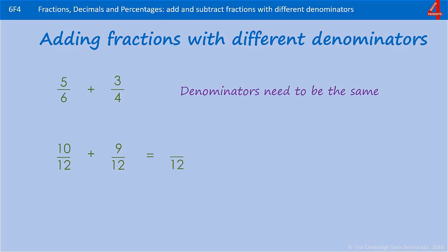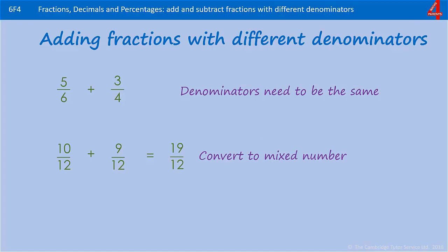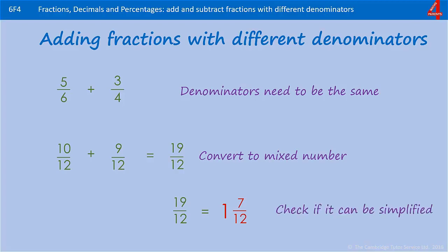We add the numerators together and that's 19. You'll notice that we have an improper fraction — the numerator is bigger than the denominator — so we need to convert this to a mixed number. We look at the denominator 12 and say how many times does that go into the numerator. 12 goes into 19 once. How many twelfths are left over? If you take 12 from 19 you're left with 7, so the answer is 1 and 7 twelfths.